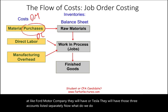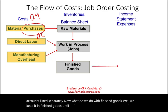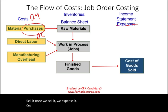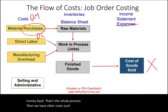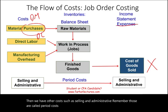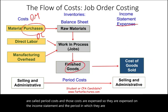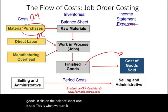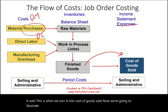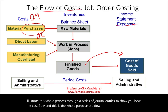We keep finished goods until we sell it. Once we sell it, we expense it on the income statement in cost of goods sold. Other costs such as selling and administrative are called period costs, and those are expensed on the income statement in the period in which they are incurred, versus finished goods which sits on the balance sheet until sold. We'll illustrate this whole process through a series of journal entries to show the flow of cost in a job order costing system.